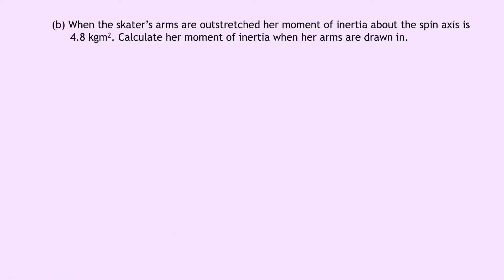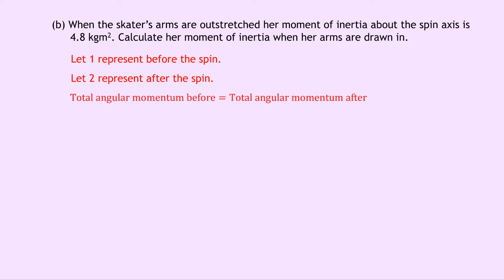Part B: when the skater's arms are outstretched, her moment of inertia about the spin axis is 4.8 kilogram meters squared. Calculate her moment of inertia when her arms are drawn in. We label 1 as before and 2 as after. Since there's only one object, conservation of angular momentum gives I1 omega1 equals I2 omega2. We want I2: so 4.8 times 3.0 equals I2 times 5.0. Rearranging gives I2 equals 2.9 kilogram meters squared.